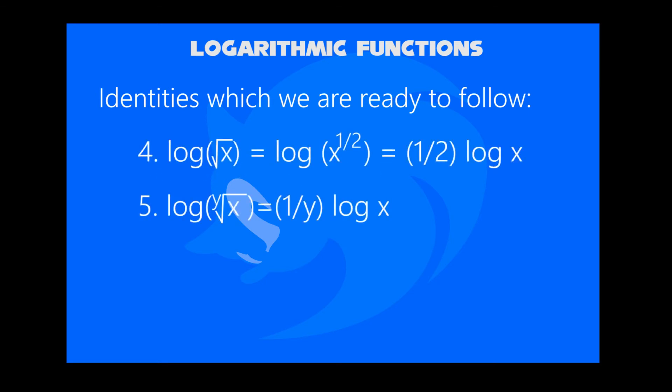Fourth identity: the log of square root x, or you can mean x to the 1 by 2 exponent, is equal to half times log x. This is same as the third identity which we have tried.